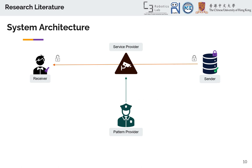The system architecture used in the paper consists of four entities: the receiver, the sender, the service provider, and the pattern provider. The receiver is a user that has a key to the encrypted data. The sender is someone providing a data stream. The pattern provider is an entity providing patterns to be checked, and the service provider is someone that performs detection. In this architecture, the pattern provider and the service provider are both assumed to be honest but curious — meaning they don't do malicious things but are curious to find any possible information about other entities. The sender is assumed to be untrusted.